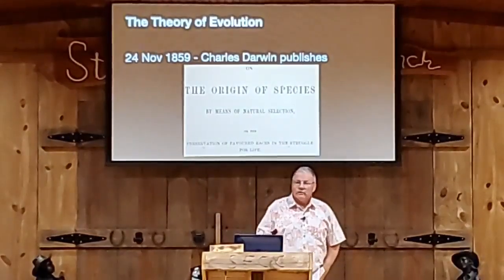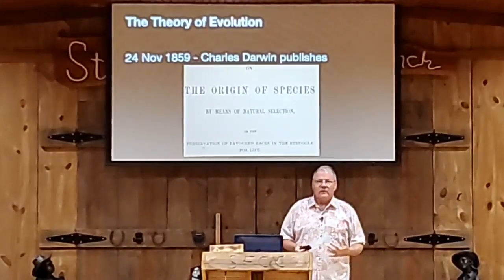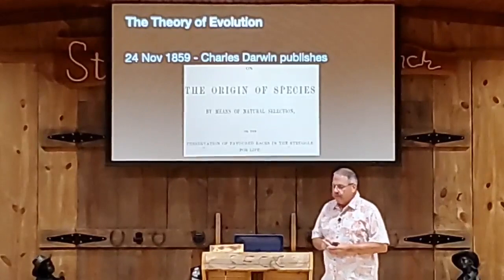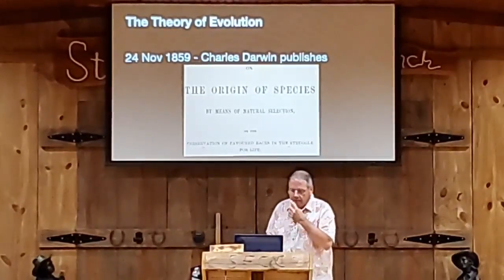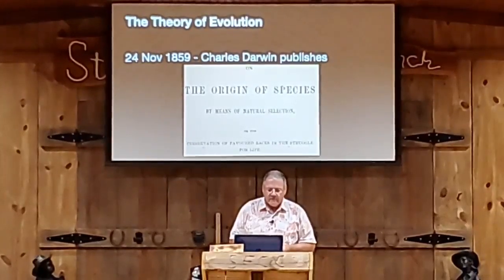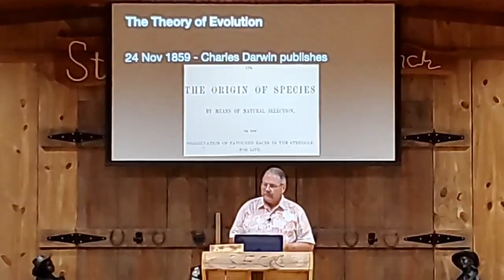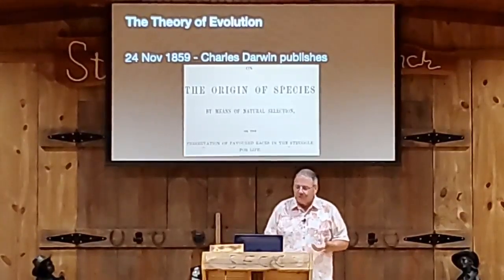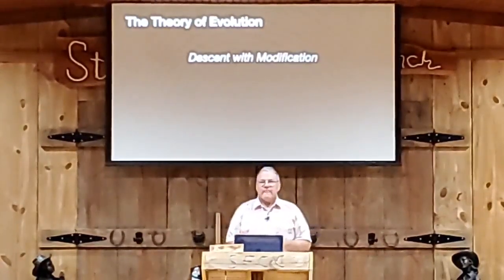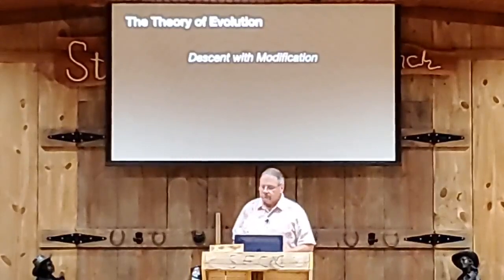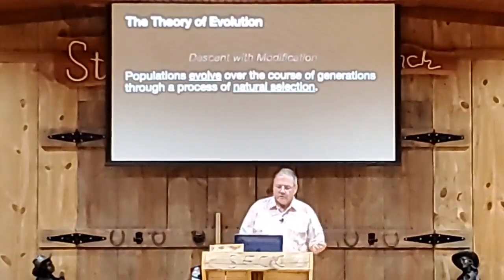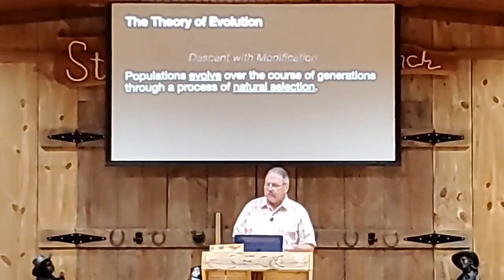Here's the story — the overview of the theory of evolution. That's an actual picture of the cover of the book titled The Origin of Species by Means of Natural Selection, or The Preservation of Favored Races in the Struggle for Life. What the theory basically talks about is descent with modification — populations evolve over generations through natural selection.